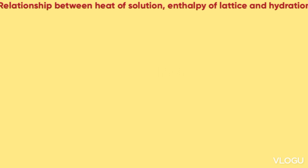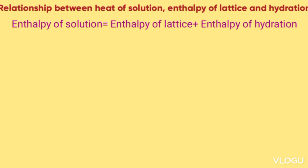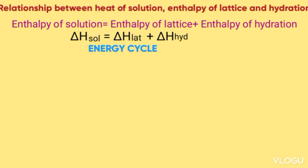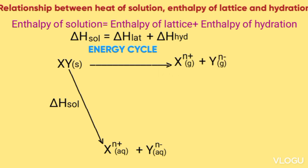The relationship between heat of solution, lattice, and hydration energy is: heat of solution = lattice energy + hydration energy. This can be shown in an energy circle. Using the example of XY solid: when XY solid is added to water, it forms X⁺ (aqueous) plus Y⁻ (aqueous) — that is the enthalpy of solution. When XY solid is broken down to form gaseous ions, it forms X⁺ (gas) plus Y⁻ (gas), and the enthalpy of lattice is positive.